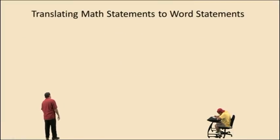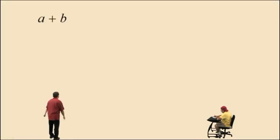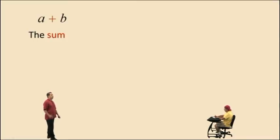Alright, translating math statements to word statements. Let's try a couple of these and we'll be done. Here, a plus b. We first define the operation when we're writing out word statements. So here we have the sum. And what are the two things we're taking the sum of? A and b. There you go.